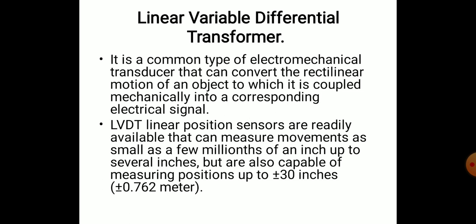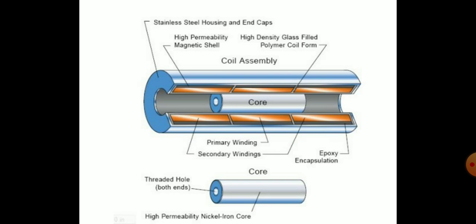LVDT linear position sensors can measure movement as small as a few millionths of an inch up to several inches. Even micro-level movement of the LVDT core produces an output electric signal, making it very widely used for small movement detection. It can also measure up to 30 inches — approximately 0.762 meters — depending on the type of LVDT.